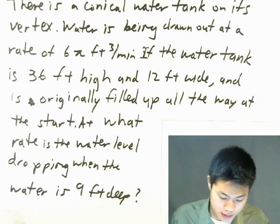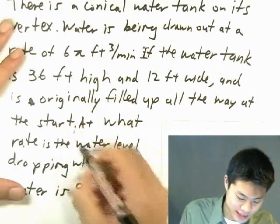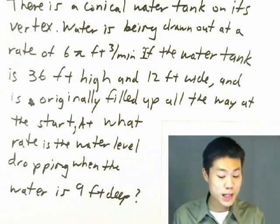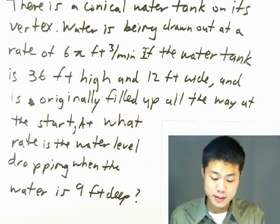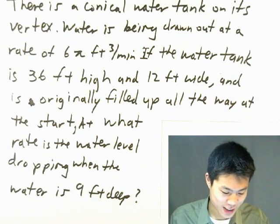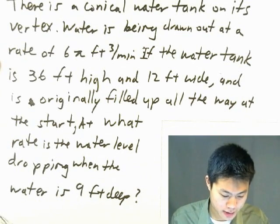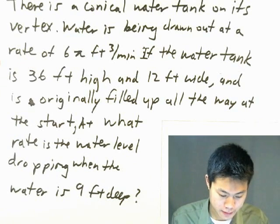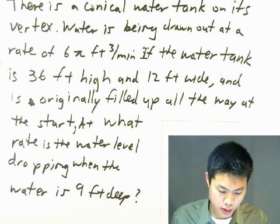Wow. Okay, there should be a comma there. That's why it didn't make any sense. Anyway, so what's being said here? Well, let's go back here. I still lost track. Water is being drawn out at the rate of six pi cubic feet per minute. Okay, so what is that?